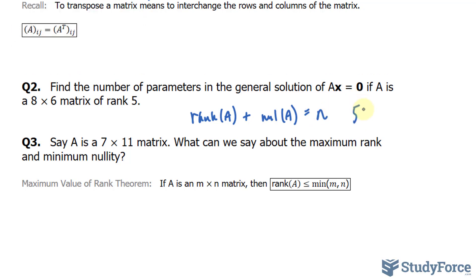The rank is 5. 5 plus the null of A is equal to 6. If we rearrange, we should end up with the nullity of A is equal to 1. And that's our answer.